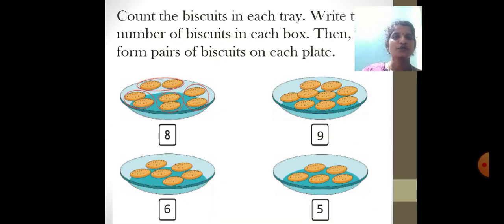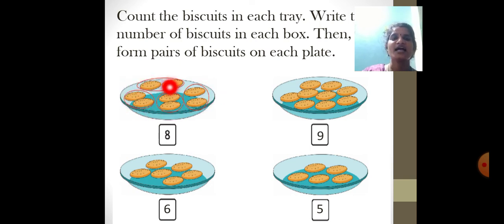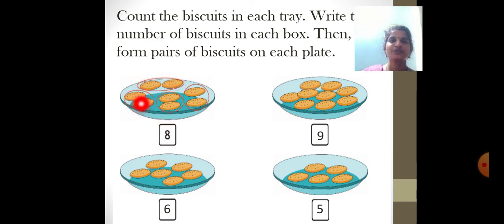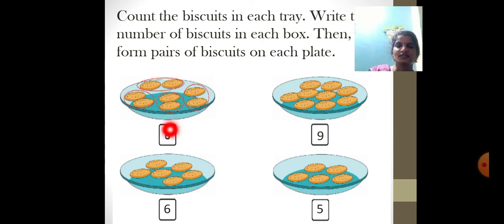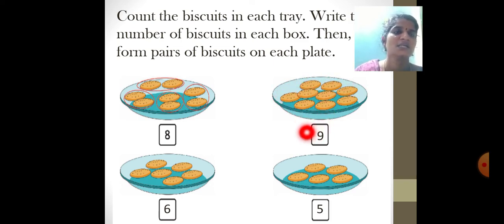Now we are going to count the biscuits in each tray. Write the number of biscuits in each box, then form pairs of biscuits on each plate — one has been done for you. Counting the first tray: 1, 2, 3, 4, 5, 6, 7, 8 — the count is 8. Make pairs: 1, 2, 3, 4 pairs. Second tray: count the biscuits — 1, 2, 3, 4, 5, 6, 7, 8, 9 — count is 9.